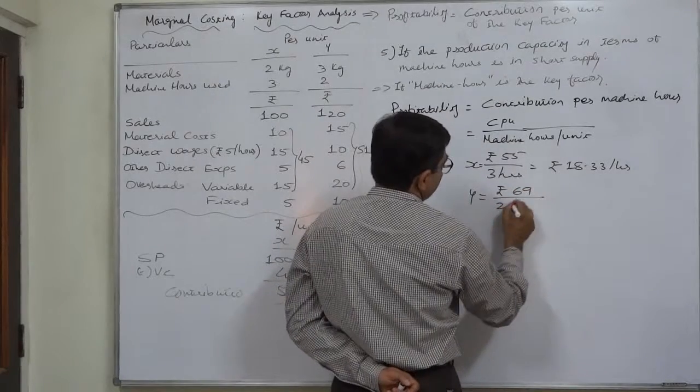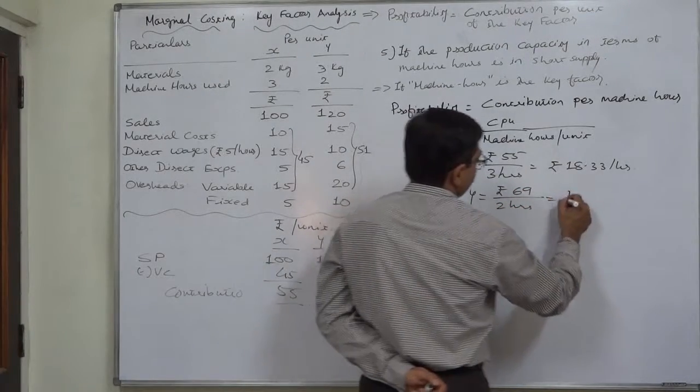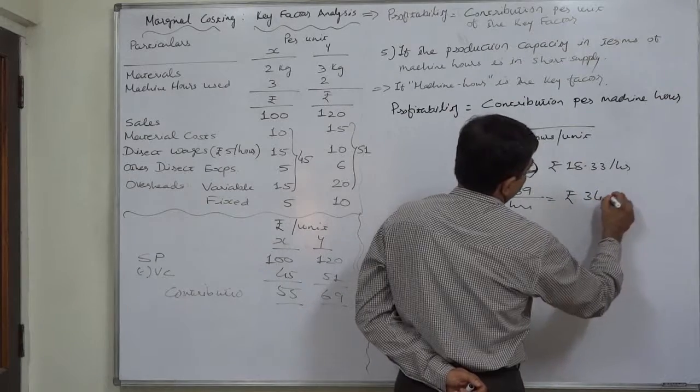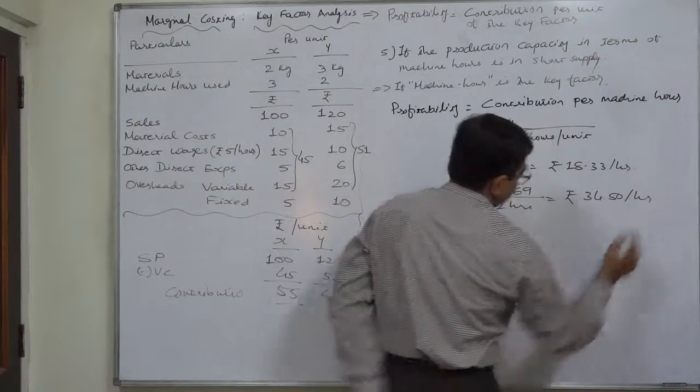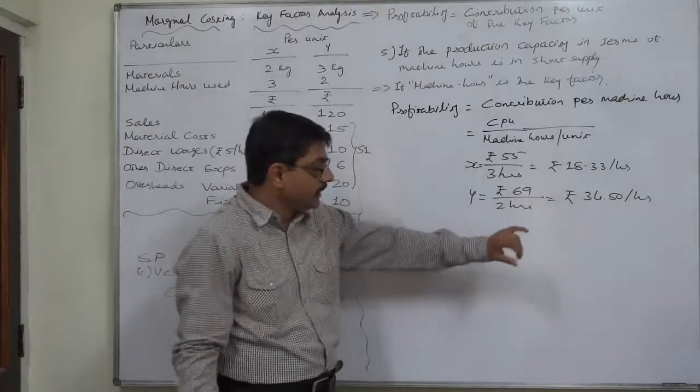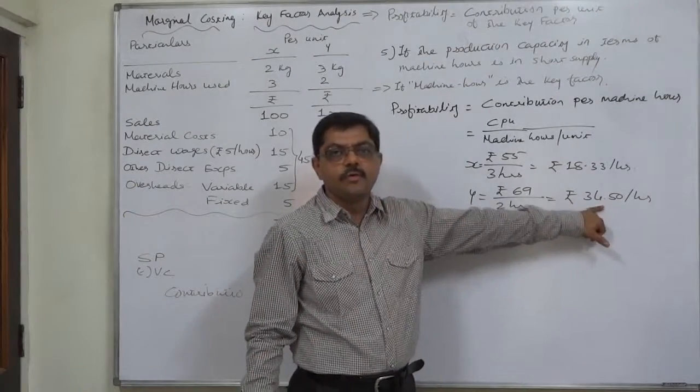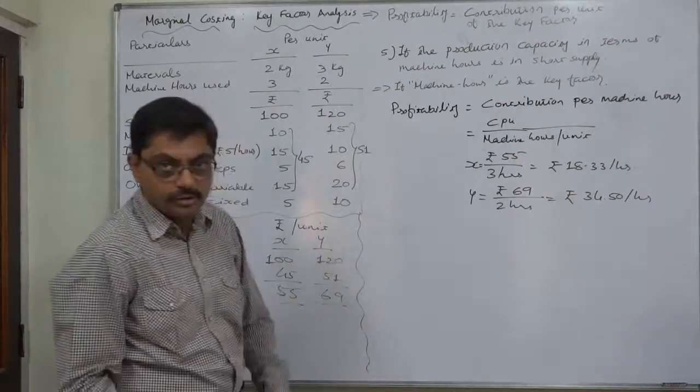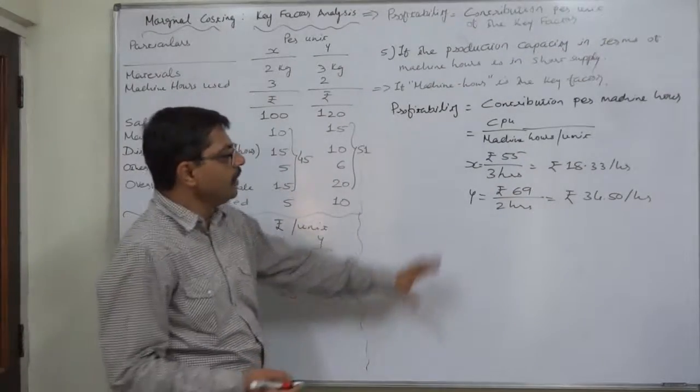That means average contribution of 34.50 per hour. That means if we consume one machine hour for Y, it generates 34 rupees 50 paise average contribution. So again, Y is more profitable than X when the machine hour is the key factor.